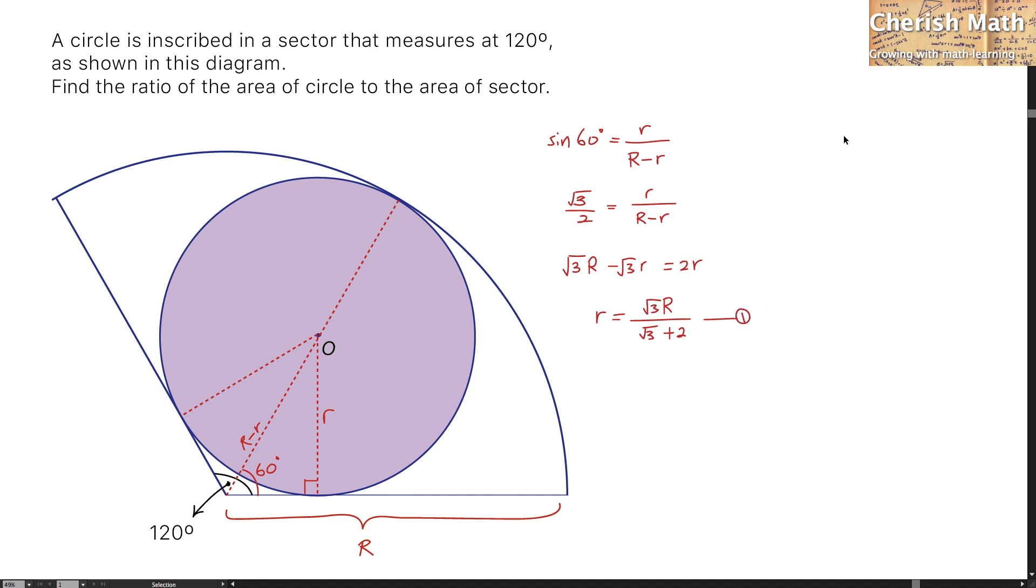When it comes to the ratio, it is by using the area of circle divided by the area of sector. For the area of circle, it is going to be pi r squared divided by the area of sector, which is 120 degrees out of 360 degrees as a fraction of pi capital R squared.